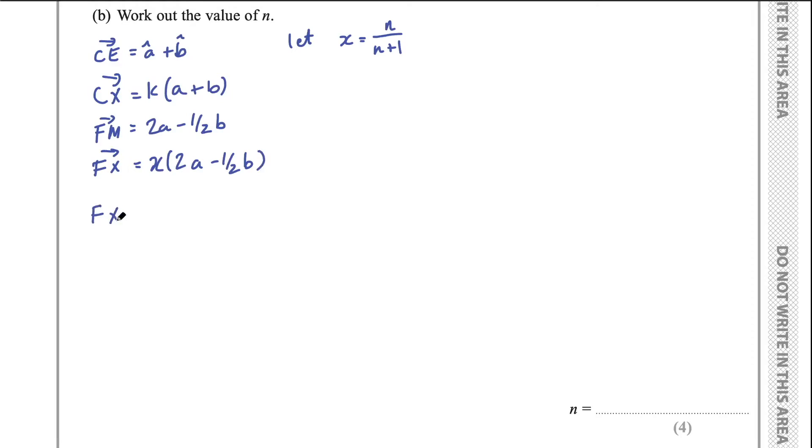So X times 2a take half b. Also FX equals FC plus CX. And in this case, FC is a take b. And CX is k times (a plus b). If we simplify that, we get, well, combine like terms. So we get a plus ka and plus kb take b. So then we can write this as (k plus 1)a plus (k take 1)b. So what this actually gives us is two expressions for the same vectors. So the vector FX is this and this here.